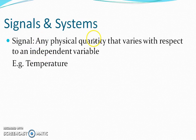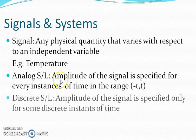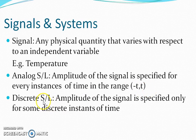A signal can be defined for every instant of time, or it can be defined for some discrete instances of time. Based on that, we can classify signals as analog signal or continuous time signal, and discrete time signal. An analog signal has amplitude specified for every instance of time in the range minus T to plus T. On the other hand, a discrete time signal has amplitude defined only for some specific instants of time.